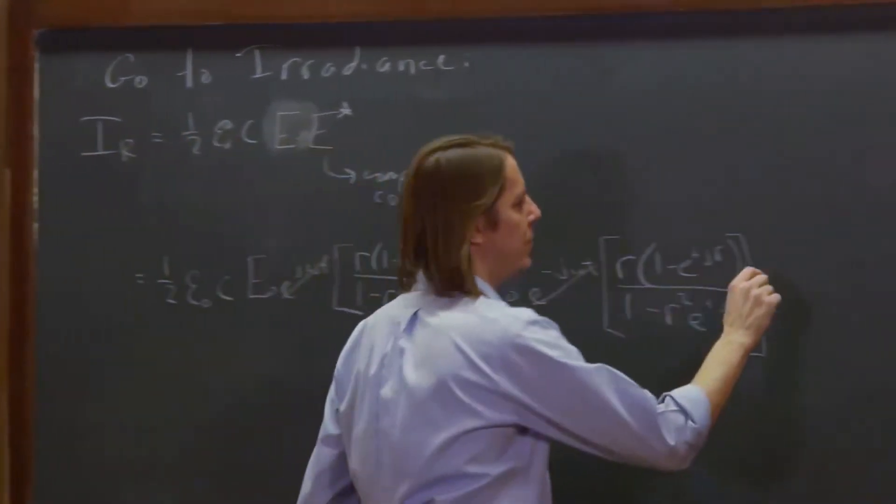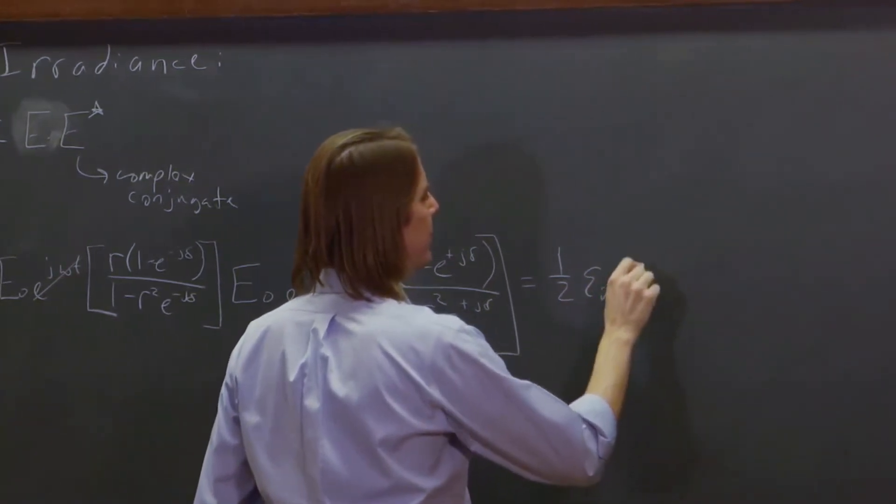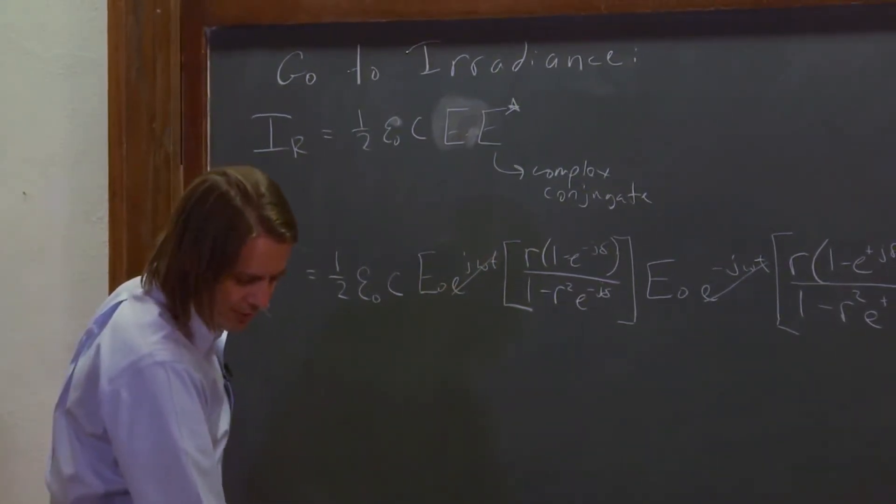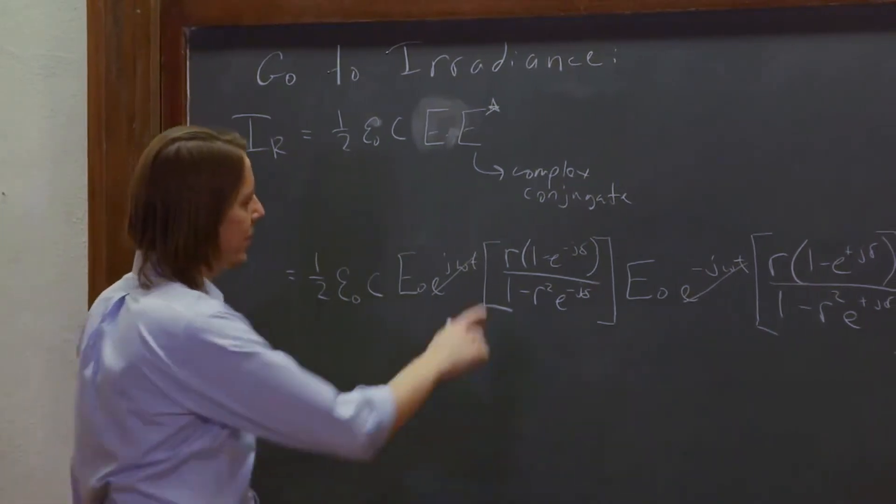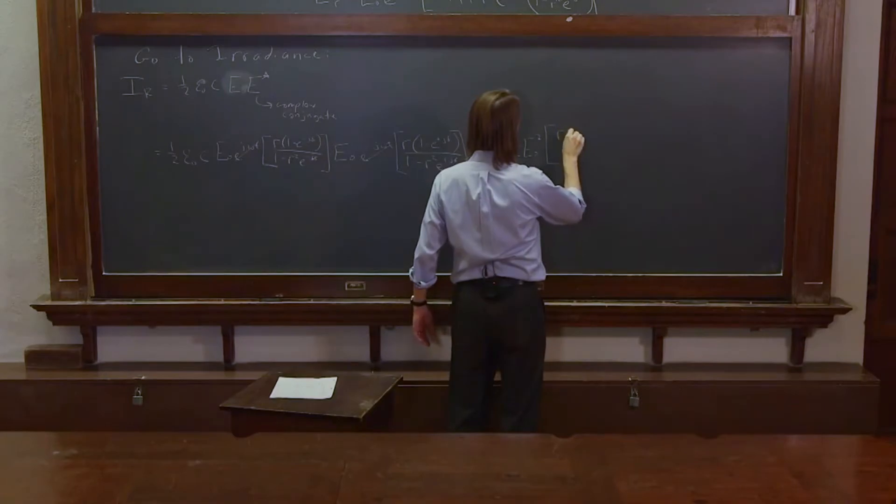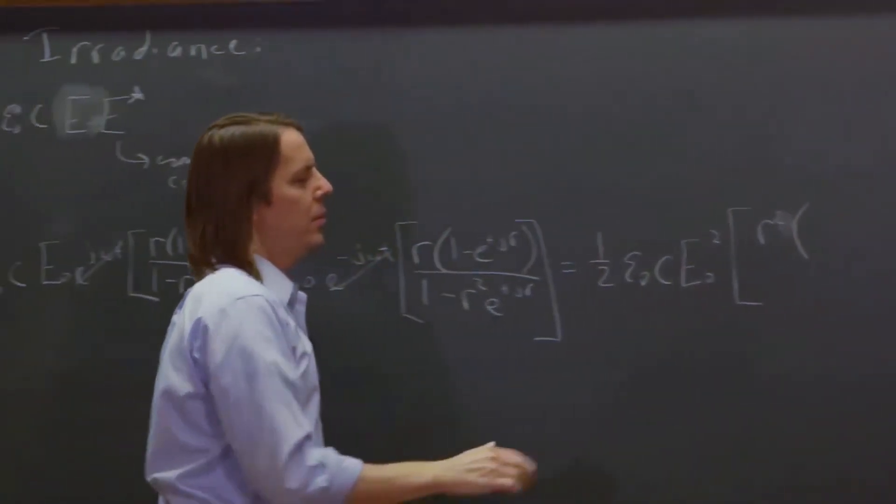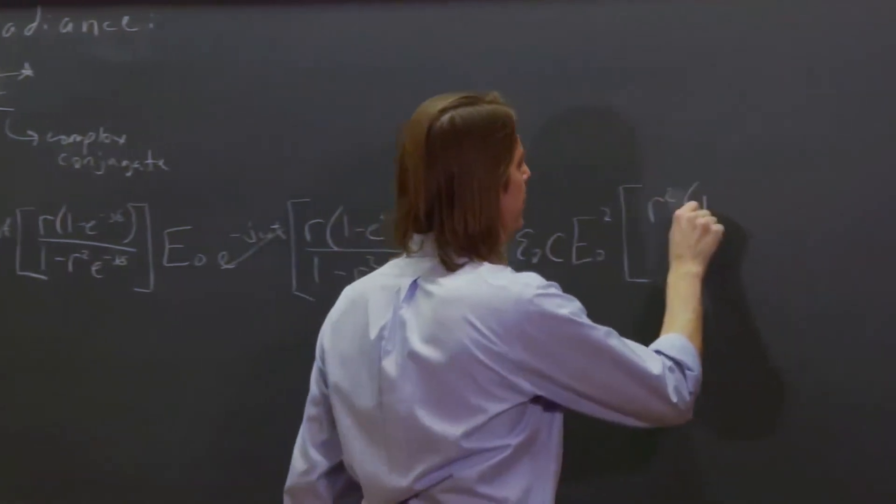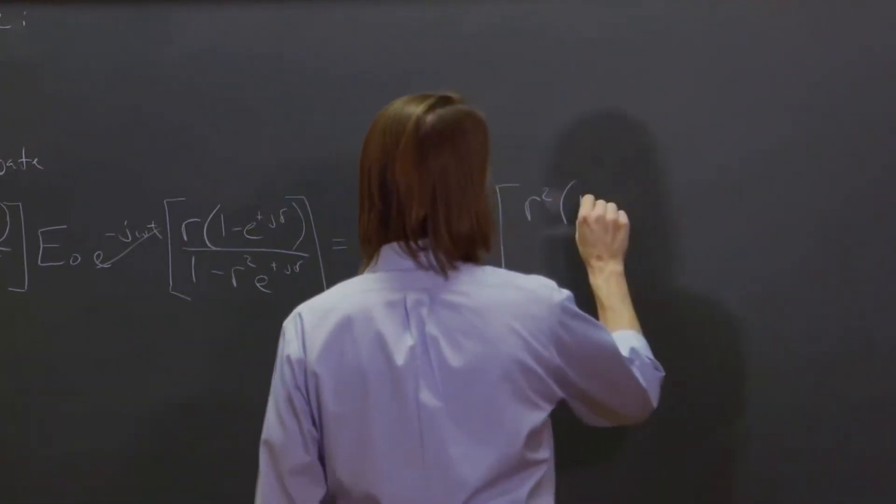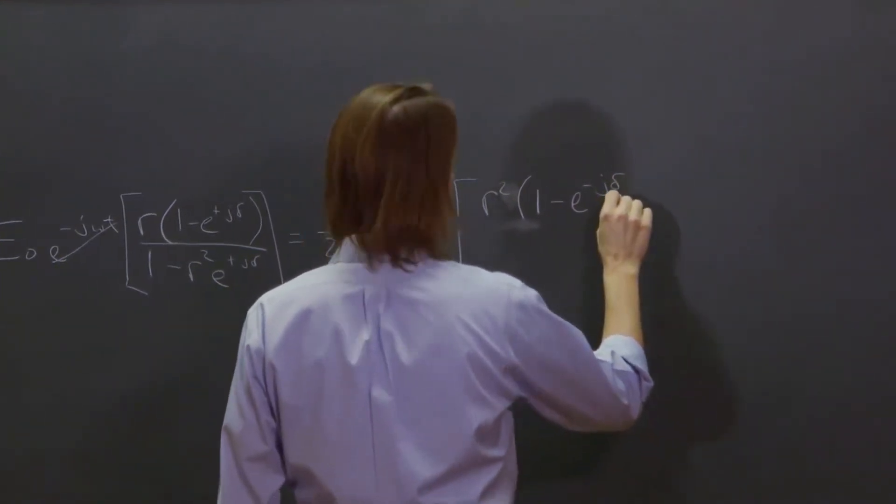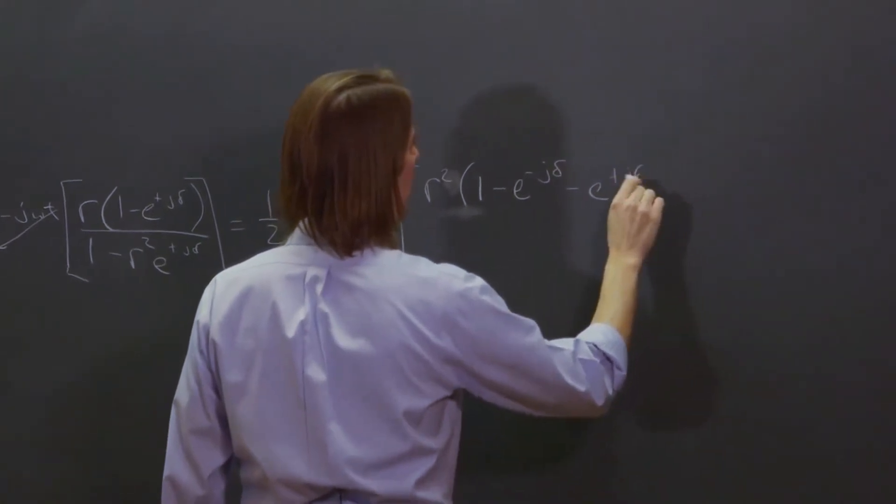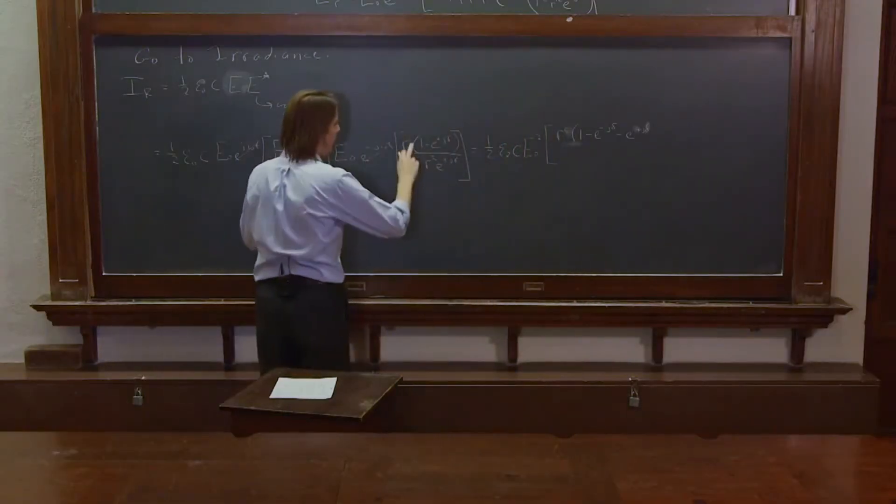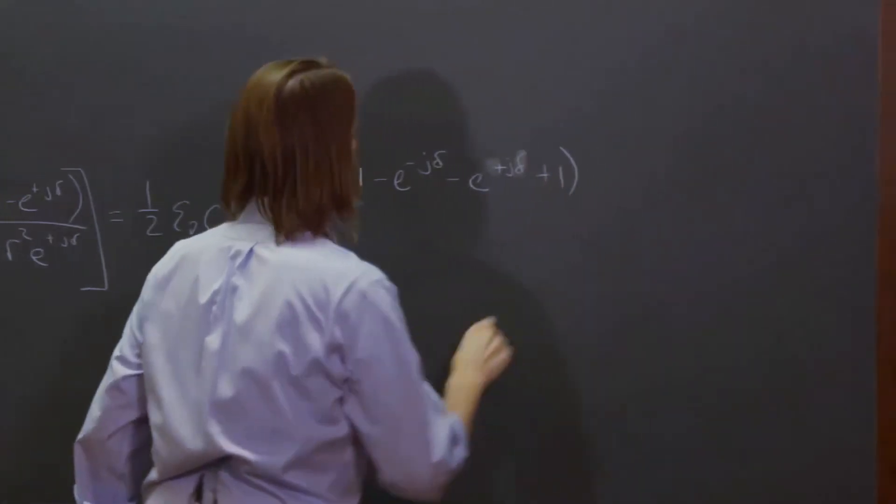Those two together make E to the zero, which is 1. We have E naught squared, so we have 1/2 epsilon naught C E naught squared, and now we actually need to multiply these out. And I believe, yes, we are going to do that. So R times R is going to be R squared. R squared, and then we are going to go ahead and FOIL out those. That's going to be 1 minus E to the minus J delta, minus E to the plus J delta, and then plus E to the zero is plus 1.